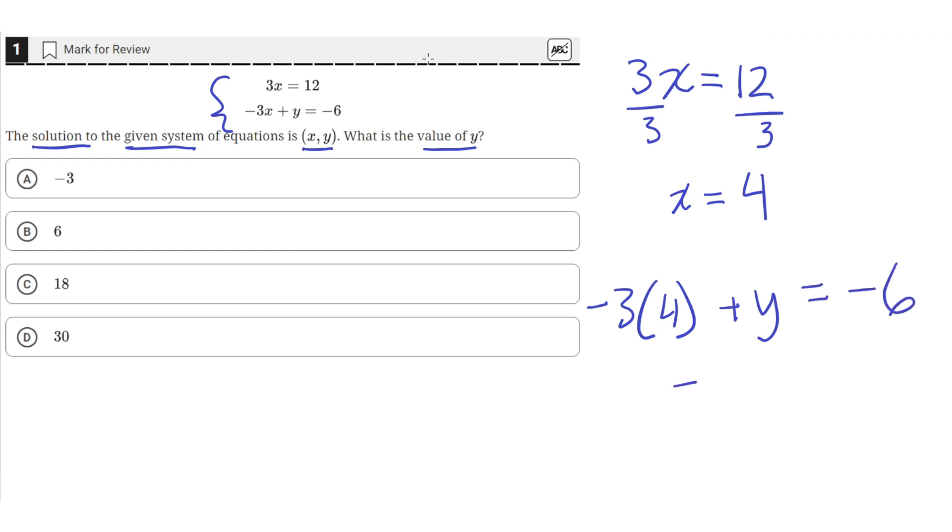So negative 3 times 4 is negative 12, plus y equals negative 6. So then to isolate for the value of y, we can add 12 to both sides, which will cancel out the 12 here, and just add a 12 to the right side. So y equals negative 6 plus 12, which is 6. So the value of y is equal to 6, which is answer choice B.